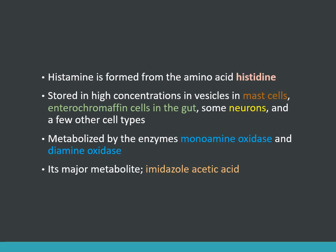Histamine is metabolized by the enzymes monoamine oxidase and diamine oxidase, and its major metabolite is imidazole acetic acid, abbreviated IAA. In diseases such as systemic mastocytosis, there is excessive production of histamine, so you can detect the disease by finding elevated IAA levels.